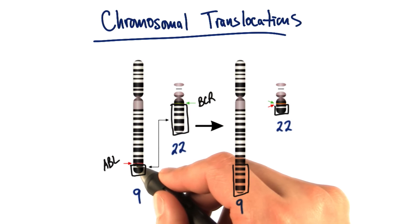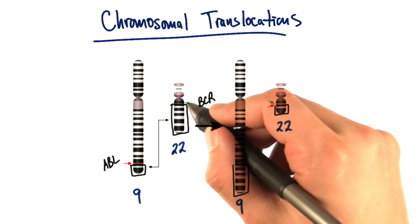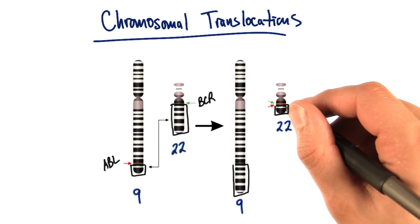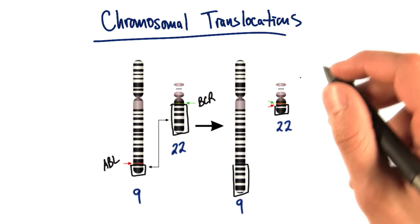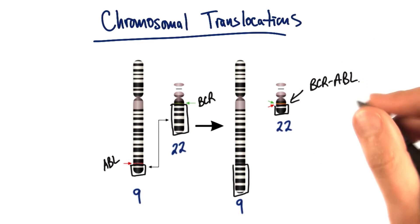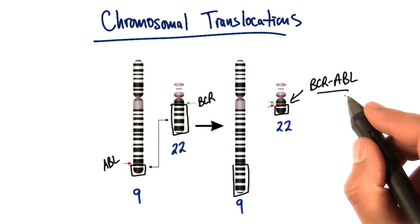So the gene ABL was the edge of the breaking point, and the gene BCR was the edge of the breaking point. And now, the ABL and BCR genes are right here next to each other, and they produce a fusion protein called BCR-ABL.